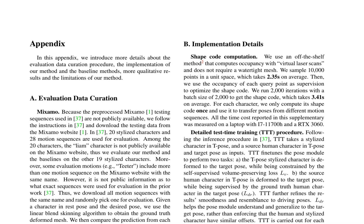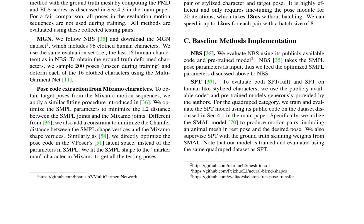For the MGN dataset, the authors use the last 16 clothed human characters and sample 200 poses unseen during training to obtain ground-truth deformed characters using the multi-garment net. The proposed method's implementation involves computing occupancy with virtual laser scans and optimizing the shape code with a batch size of 2000, taking an average of 3.41 seconds. The detailed test-time training (TTT) procedure is outlined, involving fine-tuning the pose module to perform two tasks.